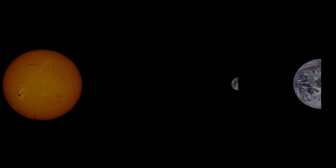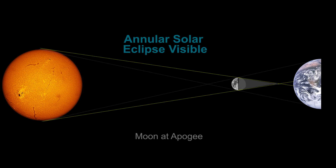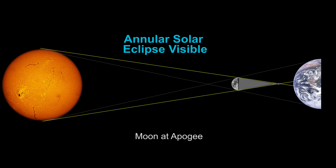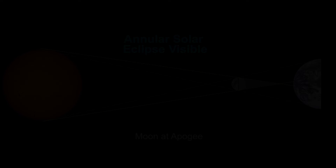However, if the Moon is at apogee, the Moon's angular size is slightly smaller than the solar disk, allowing a thin ring of sunlight to shine past the eclipsing Moon. This is called an annular eclipse.